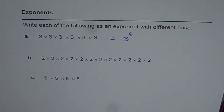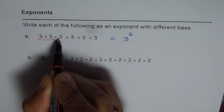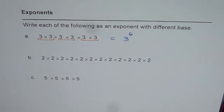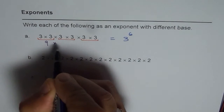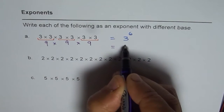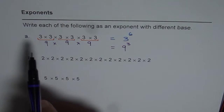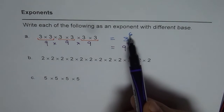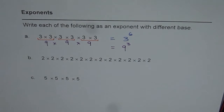Now the question is, can I write it in a different way? We could consider two 3's together. Then what is 3 times 3? Well, 3 times 3 is 9. So we get 9 times 9 times 9, and that means we can write this as 9 to the power of 3. So we have written this big number as 3 to the power of 6 and also as 9 to the power of 3, or 9 cubed. That is how we can write a number in different ways.